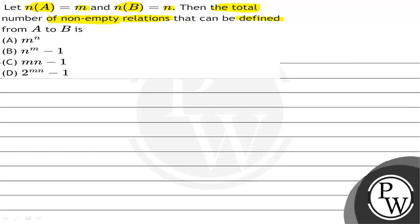Option A: n^m. Option B: n^m - 1. Option C: mn - 1. Option D: 2^(mn) - 1.